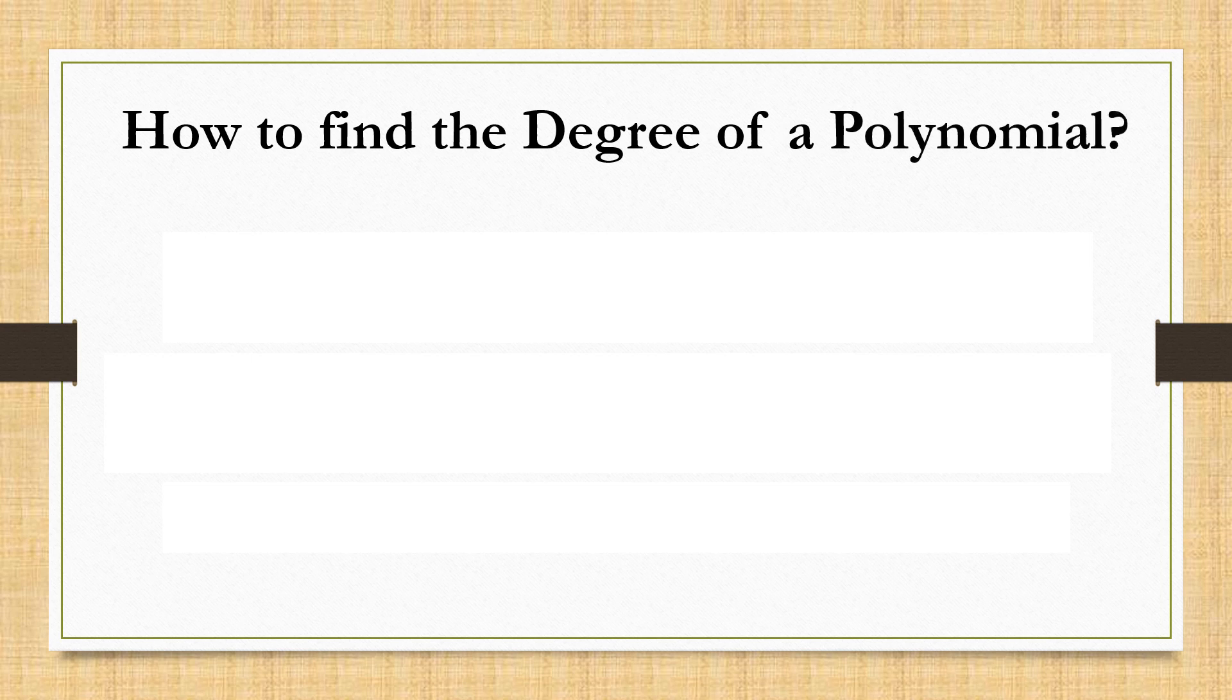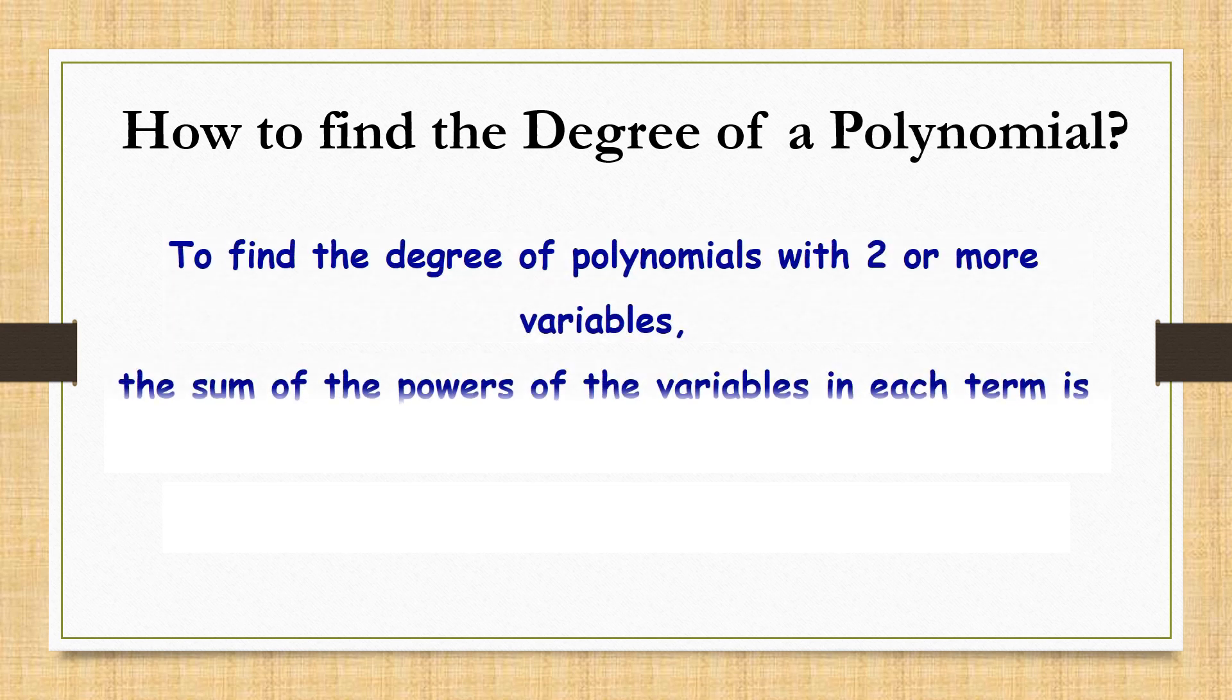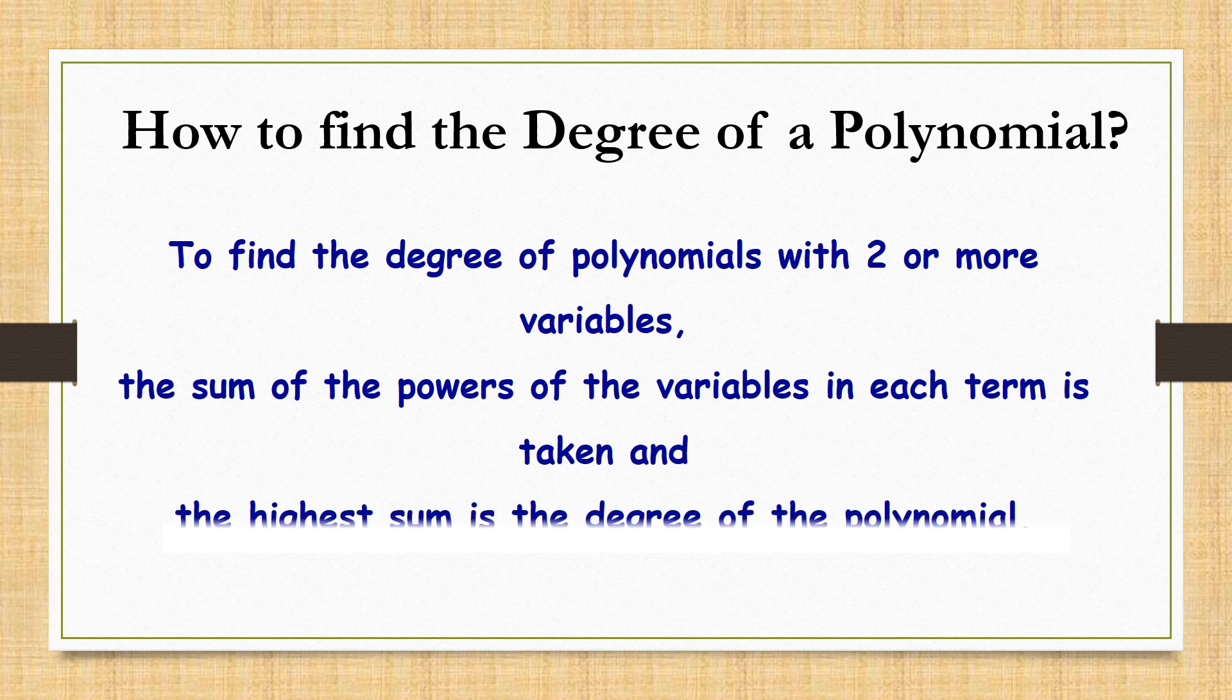Then, what about the degrees of polynomial with two or more variables? To find this, the sum of the powers of the variables in each term is taken and the highest sum is considered as the degree of the polynomial. Let us make this more clear with the help of an example.